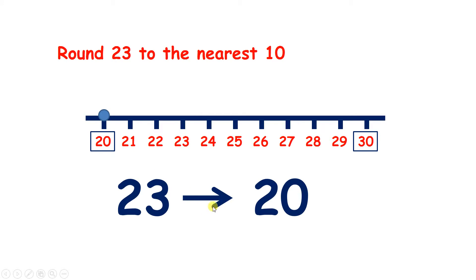And here notice I've drawn an arrow rather than an equals sign, because equals means is the same as, and 23 isn't the same as 20, but it does round to 20.